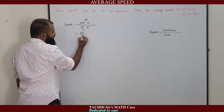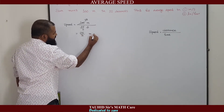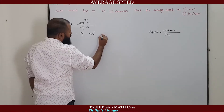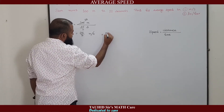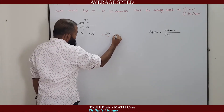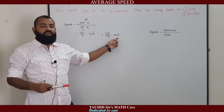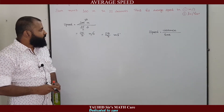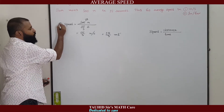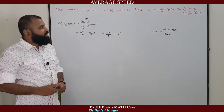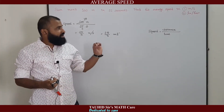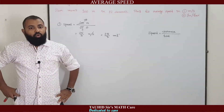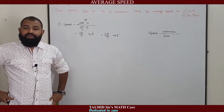This gives us 25 by 3 meter per second. We can write this as a fraction or in decimal form — both are pronounced as meter per second. This is the answer to part one, where we are asked to write the answer in meter per second.